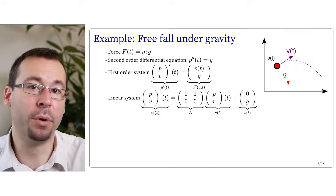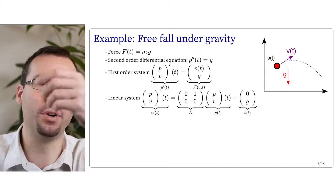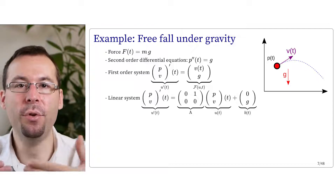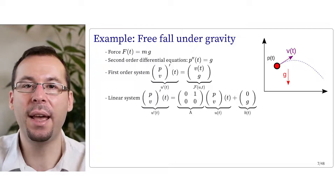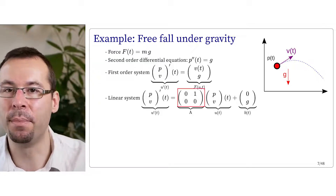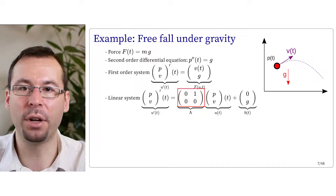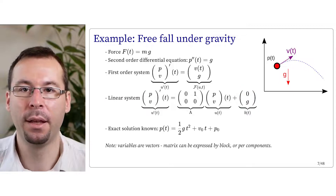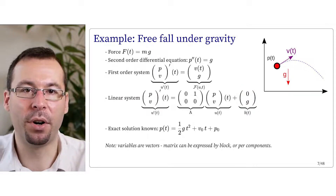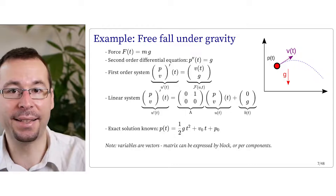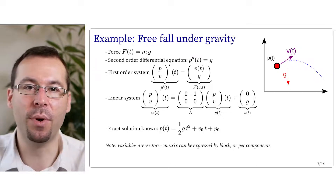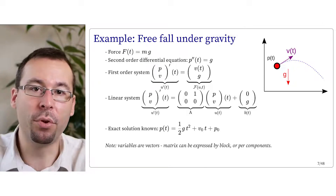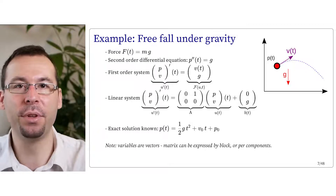One of the simplest examples of a differential equation is the free fall of a particle: p double-prime of t equals g. As a system, u prime of t equals A u of t plus b of t, where A has a single one in the top right corner and zero otherwise, and b equals the vector (0, g). We don't need a numerical solver for gravity since we know the exact solution: p of t equals one-half g t² plus v₀ t plus p₀. But it can be used to compare against a numerical solution.